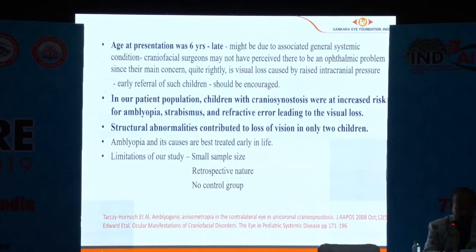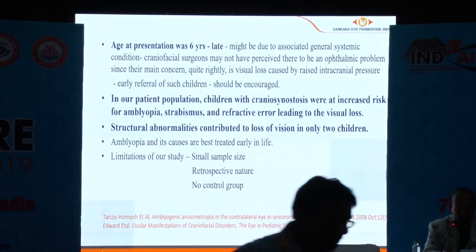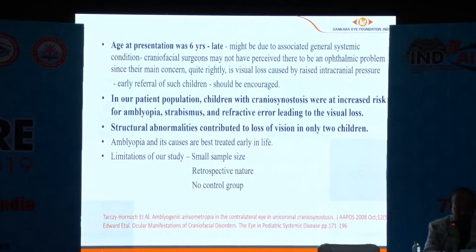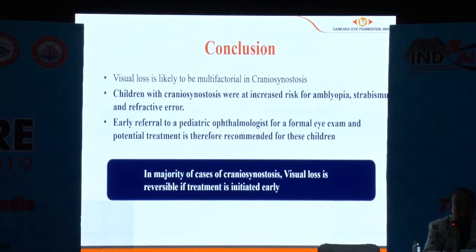In our patient population, children with craniosynostosis were at increased risk of amblyopia, strabismus, and refractive errors leading to visual loss. Structural abnormalities contributed to loss of vision in only two children. Limitations of our study include small sample size, retrospective nature, and no control group.